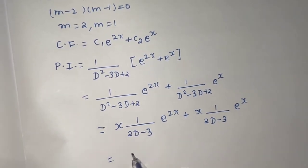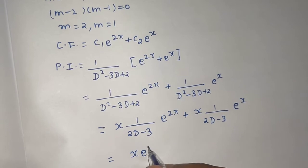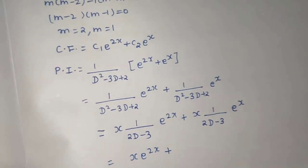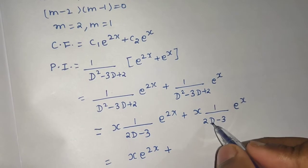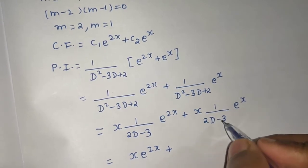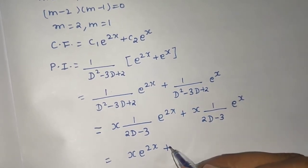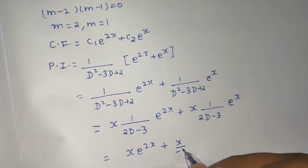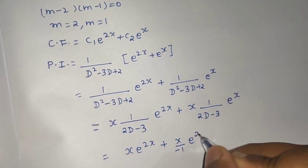So x by 1 is simply x, e^(2x). First one is done. Second one: if you put 1 here, so 2 minus 3, that is minus 1. So you are getting x divided by minus 1, e^x.